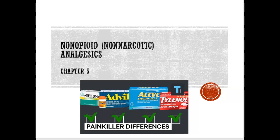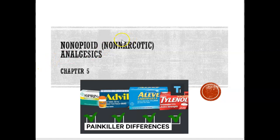Welcome to Chapter 5, which is on non-opioid or non-narcotic analgesics. An analgesic is basically a pain reliever — when we say something is an analgesic, it means we're taking medication to help with pain. Non-opioid, or non-narcotic, means not addicting. So a pain killer that you can't get addicted to, or it's very hard to get addicted to.